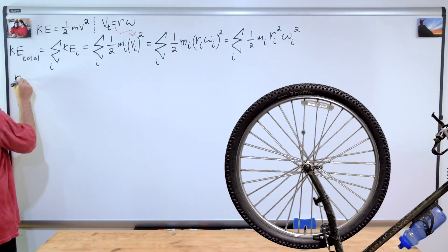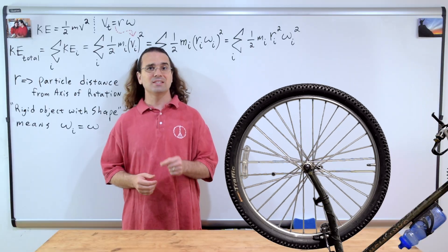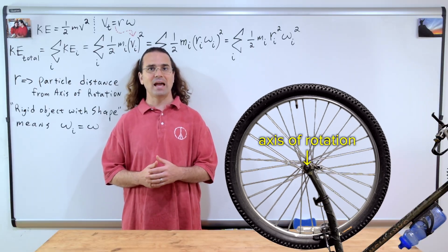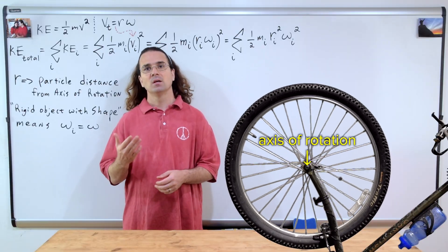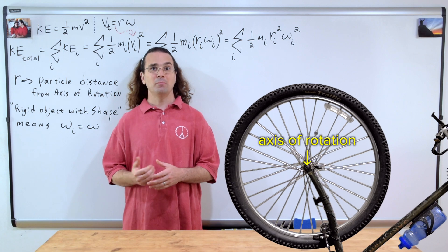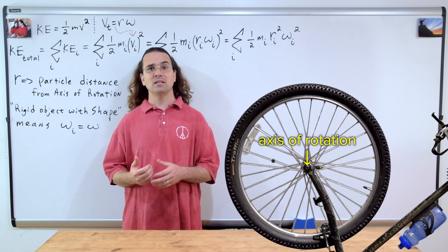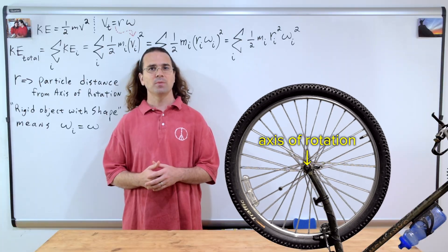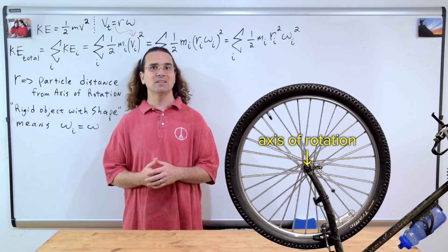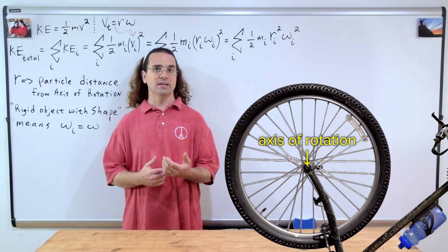A couple of things to point out. First off, realize r in this equation is the distance each small piece is from the axis of rotation. Second, because the wheel is a rigid object with shape, meaning it does not change shape as it rotates, the angular velocity of every piece is the same. This means we do not need the subscript i for each piece's angular velocity. We can simply write omega without the i subscript.